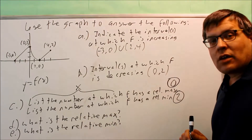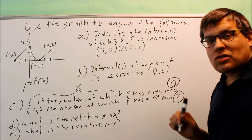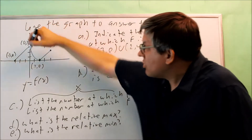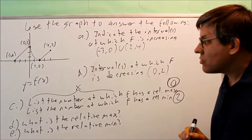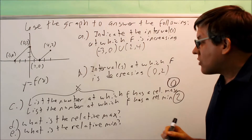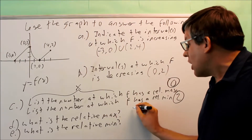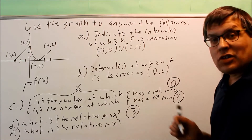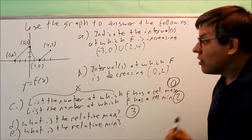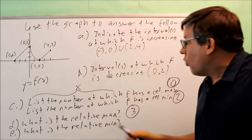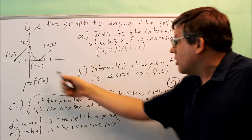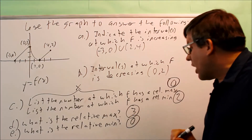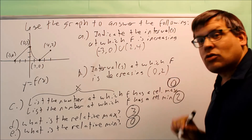What is the relative max? This is asking for the y value. We already said the relative max is at (0, 3), so the y value is 3. What is the relative min? It's asking for the y value where you have a valley. The y value there is 0. So that's the answer for that one, and we've answered all the questions.